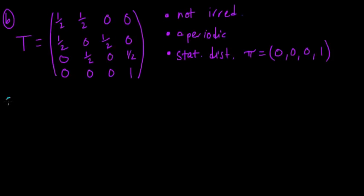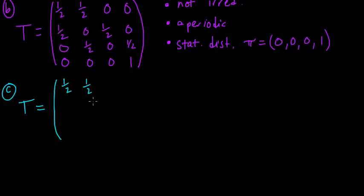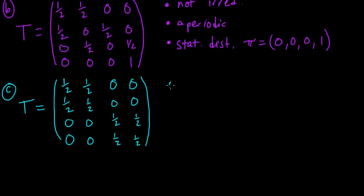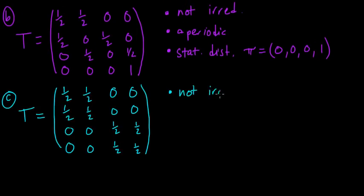One more example on these four states. So we saw an example that was irreducible but not aperiodic, and then one that was not irreducible but was aperiodic. Now we'll see something a little bit different. In this one, you can go back and forth between one and two, but you can't get to three and four from one or two. And when you're in three or four, you can go back and forth between three and four, but you can't go to one or two. So this one is not irreducible for exactly that reason — you can't get from three to two, for example, with positive probability.